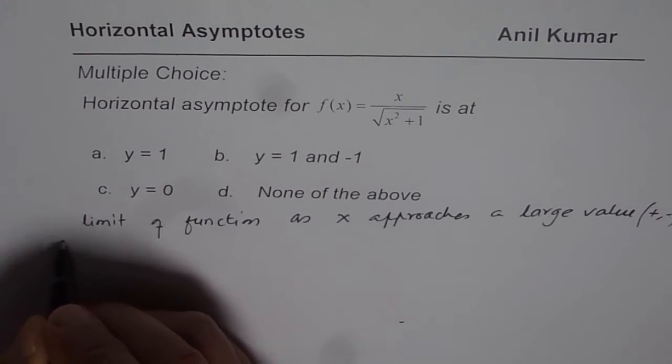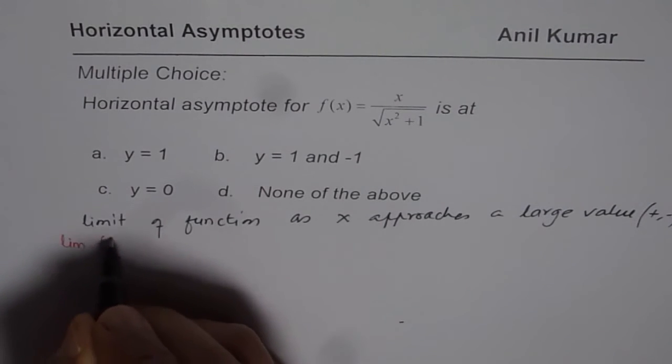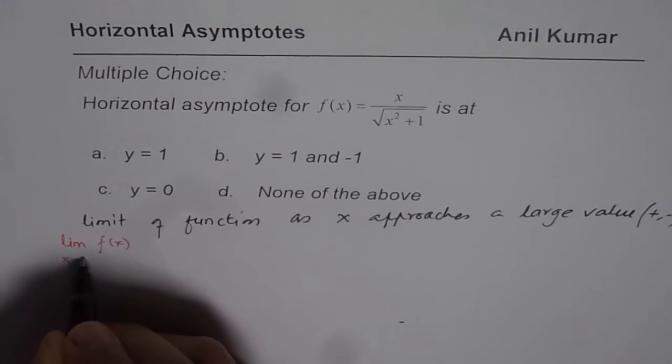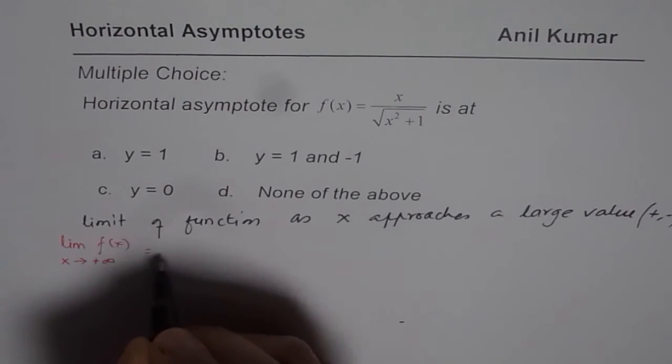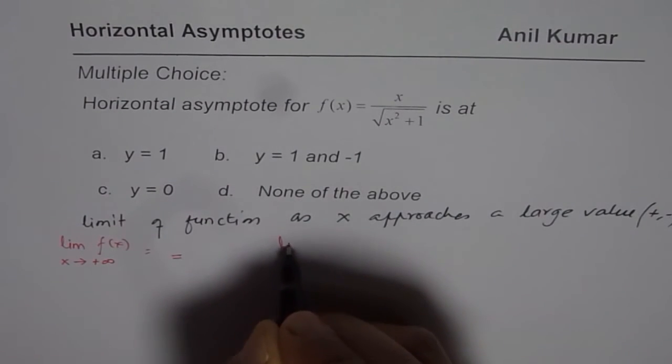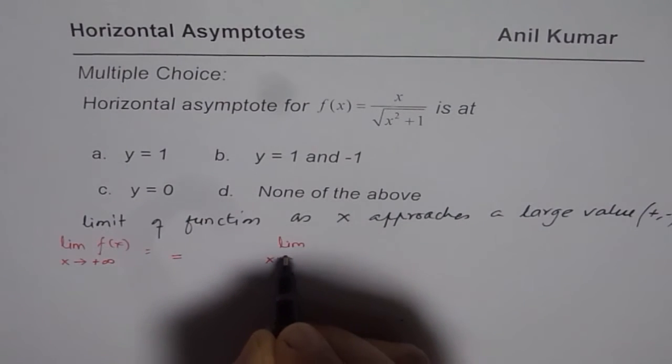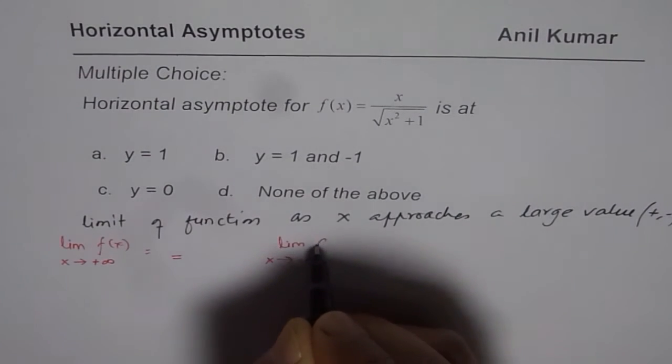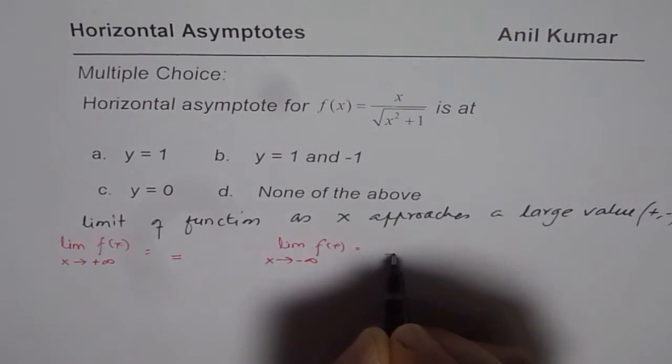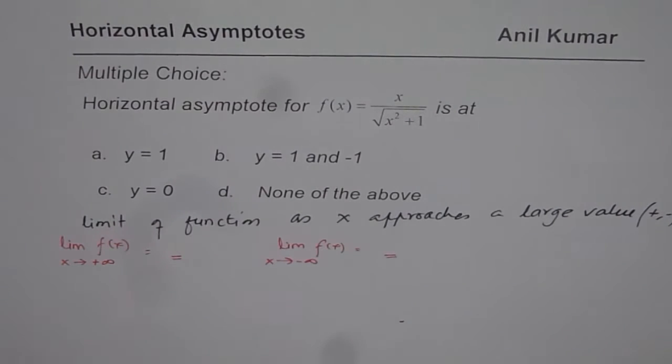So the idea here is we need to find limit of the function. We have to find limit of the function f(x) as x approaches positive infinity. That will give us one value. And also limit of the function as x approaches negative infinity. So that will give us another value. So these two values could be different. If they are different then we have two horizontal asymptotes.